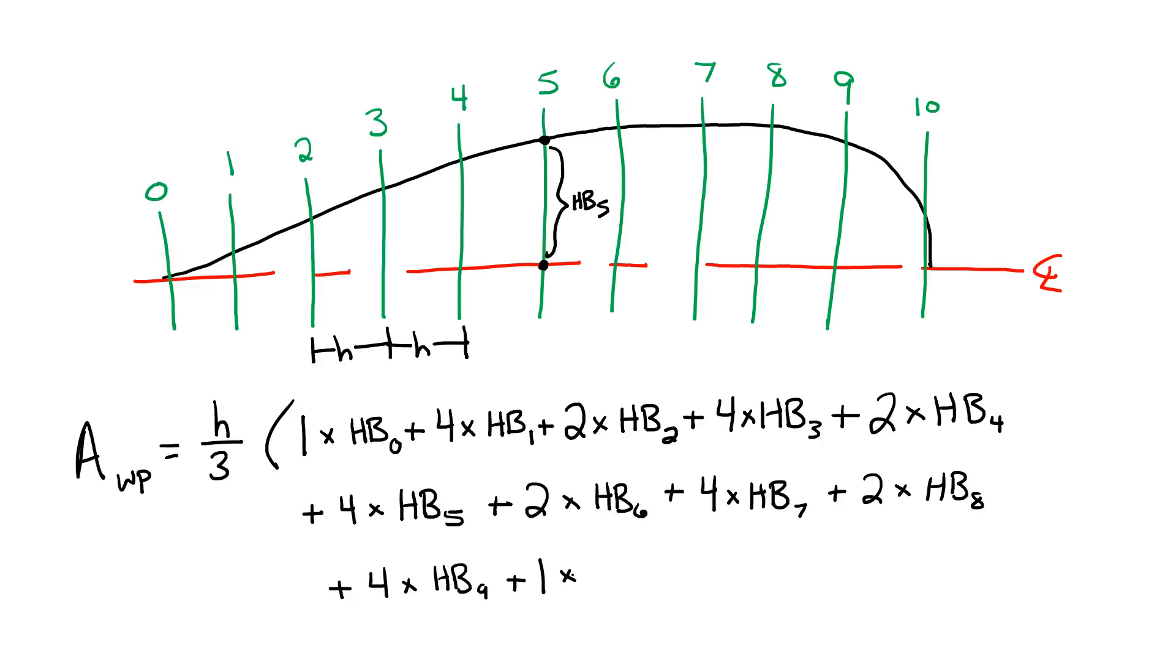Until the end where Simpson's multiplier changes back to a 1. That way 1 begins the equation and 1 ends the equation, where everything else in between is alternating between 4 and 2.